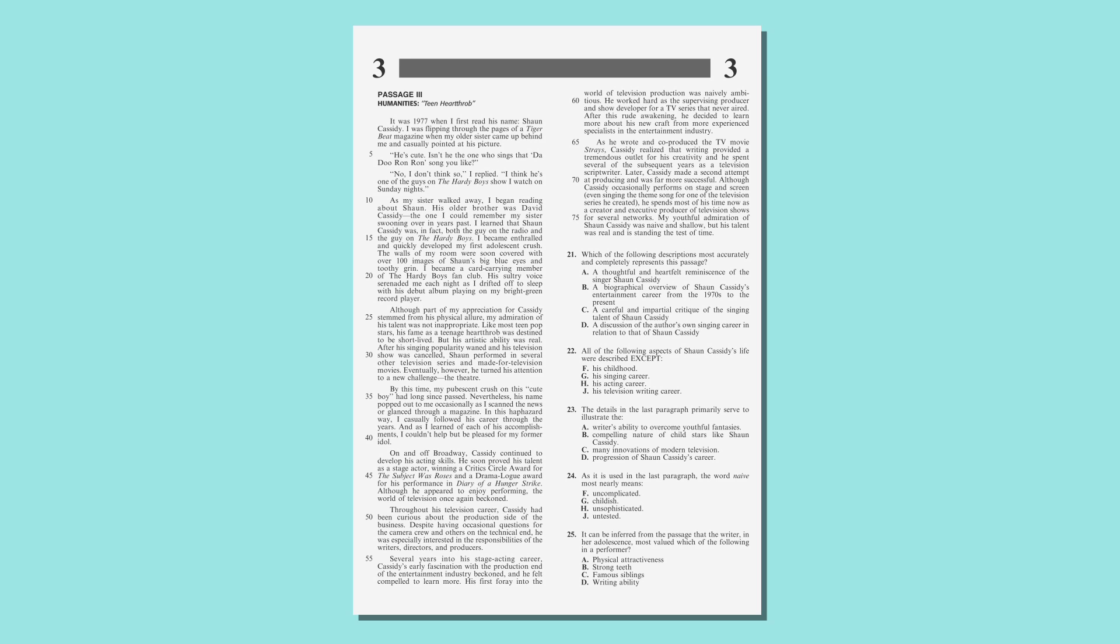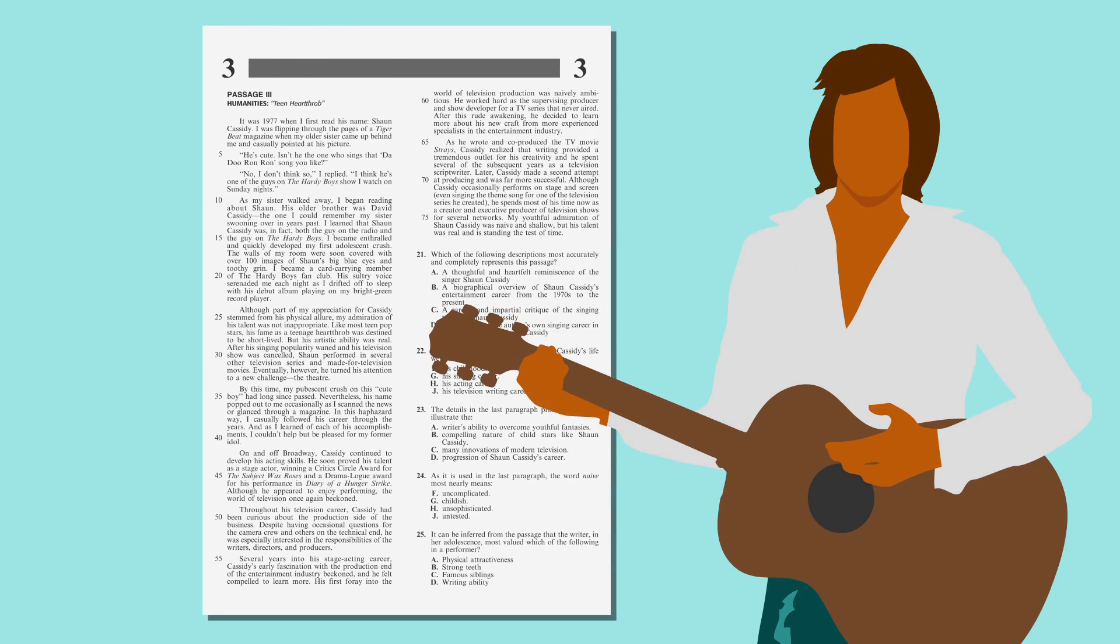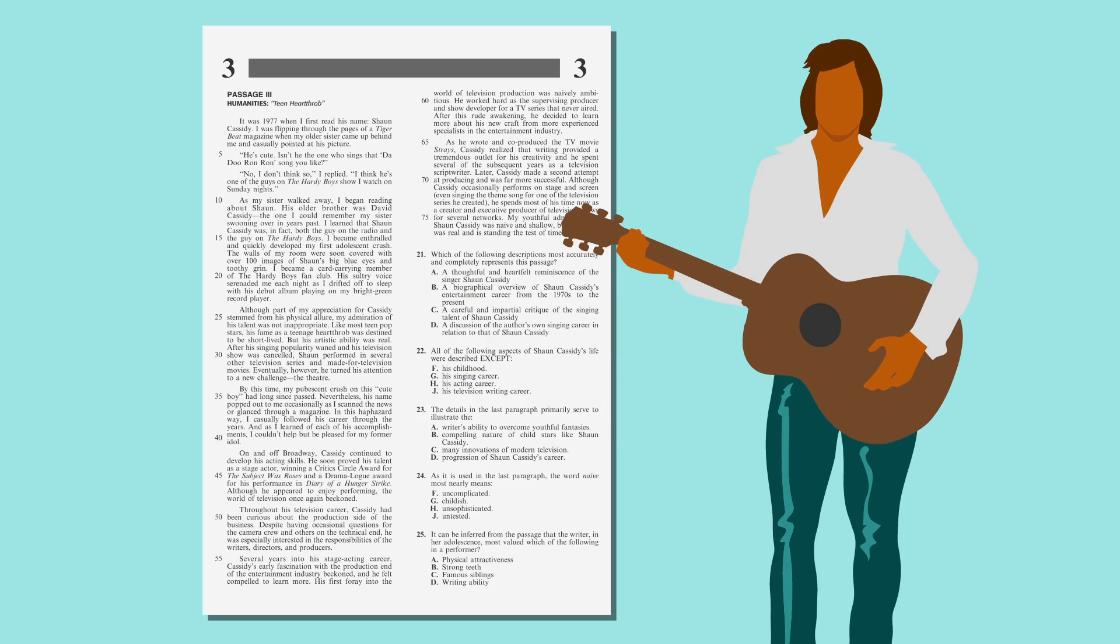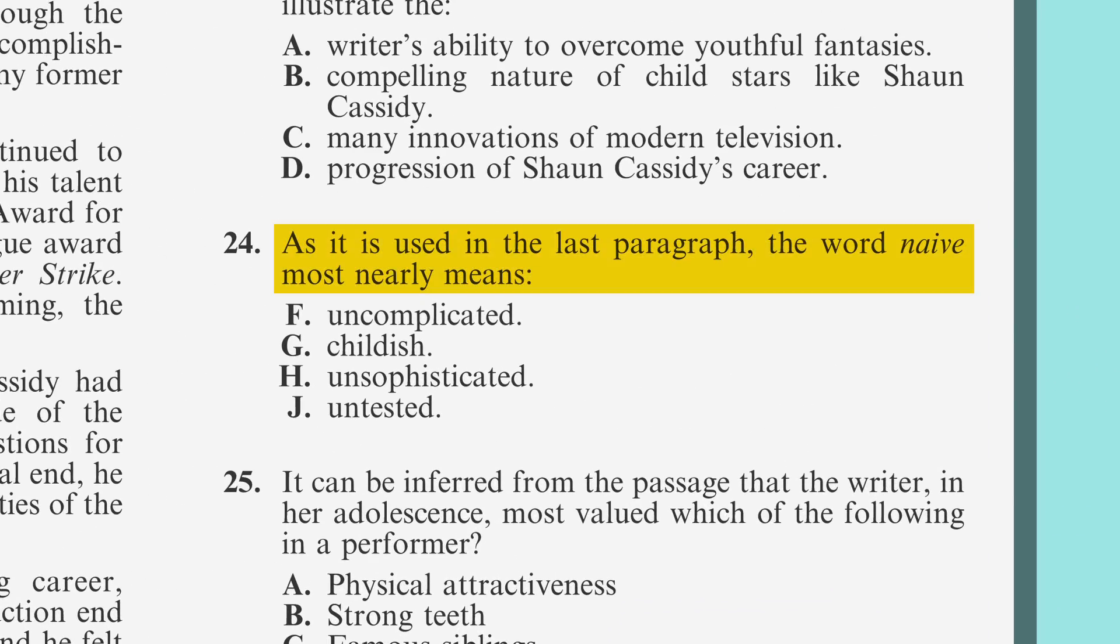Let's look at an example from the ACT about 70s teen idol, Sean Cassidy. Now, I know most of you have no idea who that is. That's okay. He was just like any other modern-day star, only with feathered bangs and tight satin pants. As it's used in the last paragraph, the word naive most nearly means: